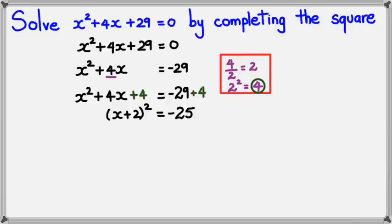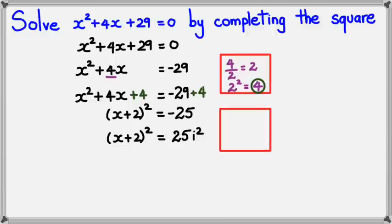Now this is the part where we can change -25. We can alter it a bit. Because we know that (x + 2)² = 25i². Now, if you aren't sure how I got 25i², just have a look in the red box here.